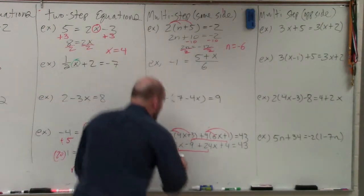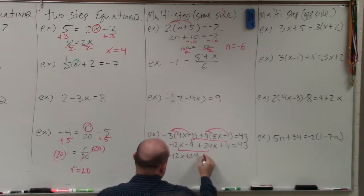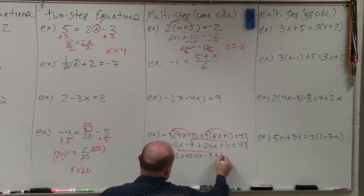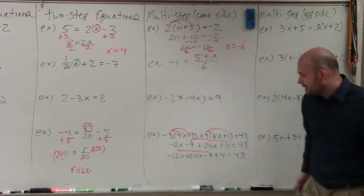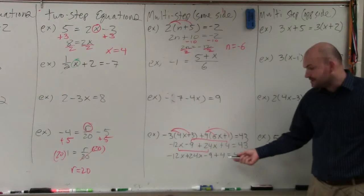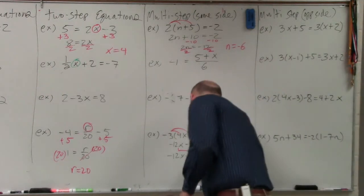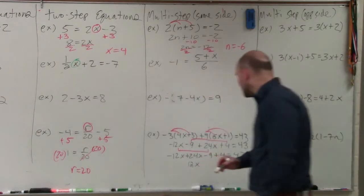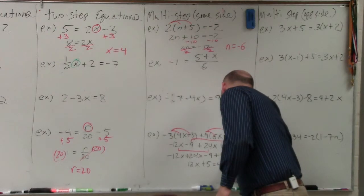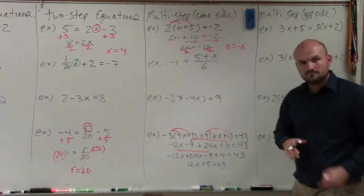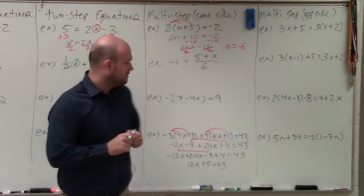So a lot of times it's helpful to rewrite it. You don't have to do this, but I'll just do this this one time so you guys can see. What I'm doing is I'm just organizing the variables next to each other. I'm putting the x's next to each other and the numbers next to each other. Therefore, negative 12x plus 24x is 12x. And negative 9 plus 4 is going to be 5 equals 43, right?